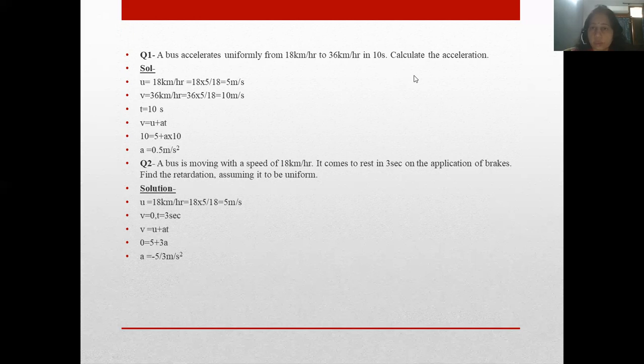In each and every question, you have to write first the given values. What is given in the question? You have to think which equation out of the three you need to use. The question says accelerate from 18 km/h. See the unit - km/h, meter per second - these are all velocity units. It started from 18 km/h, time is 10 seconds. First, match all the units. Here it is km/h, km/h. We will change everything to this unit - kilometer per hour to meter per second - then we will start the question.